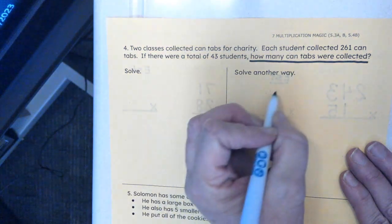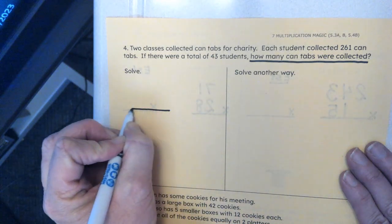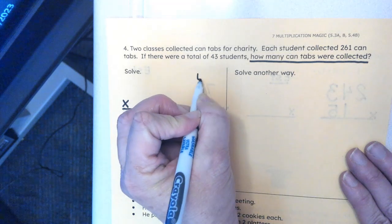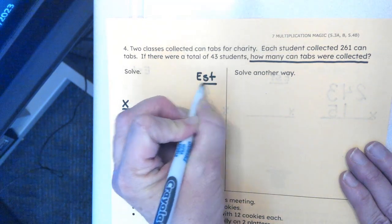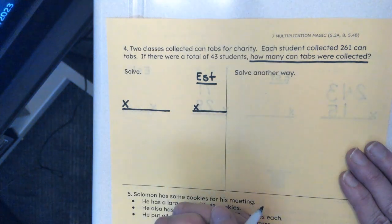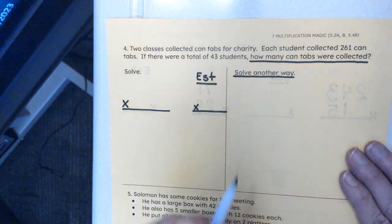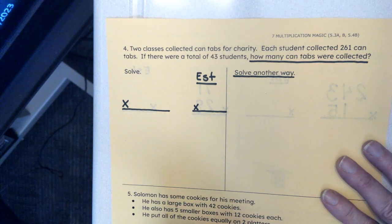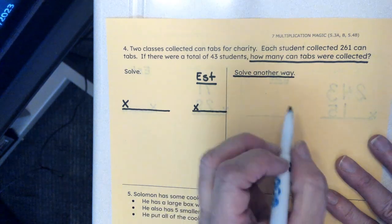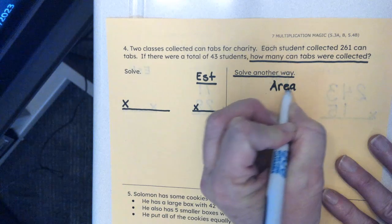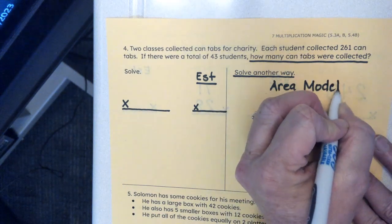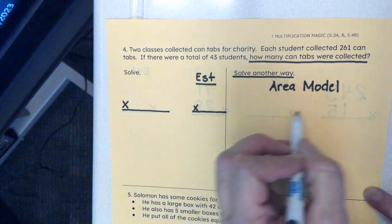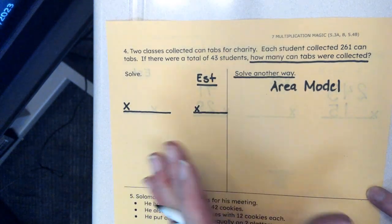We're going to go ahead and set up our problem here. I'm going to let you set that up. I do want you to make a quick estimate over here to the side. You may have to write kind of tiny. And then it says solve another way. I know that we talked about using the area boxes, the area model, on Monday and even last Friday. So what you can do is you can use the area model, or maybe you have another way that you want to show that you can find the answer. I just want to see that you can find the answer another way. So whatever you choose here, it should match or resemble what you do on this side.